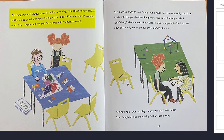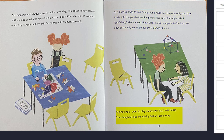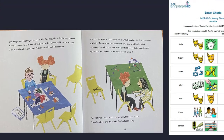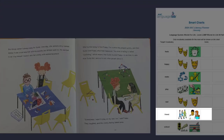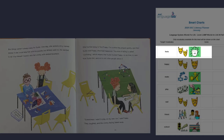But things weren't always easy for Suki. One day, she asked a boy named Michael if she could help him with his puzzle, but Michael said no, he wanted to do it by himself. Suki's skin felt crinkly with embarrassment. She hurried away to find Poppy. For a while, they played quietly, and then Suki told Poppy what had happened. This kind of telling is called confiding, which means that Suki trusted Poppy to be kind, to care how Suki felt, and to not tell other people about it. Sometimes I want to play on my own, too, said Poppy. They laughed, and the crinkly feeling faded away. Suki was sad when her friend Michael did not want her to help put his puzzle together. She feels better when she confides or tells a trusted friend what happened.